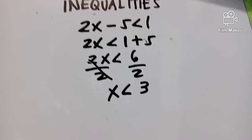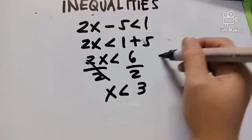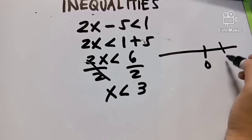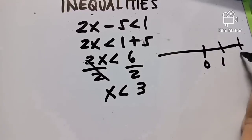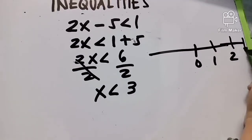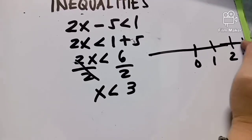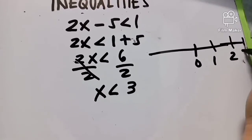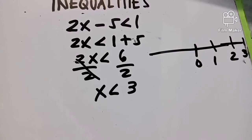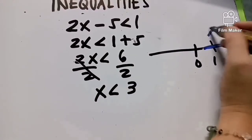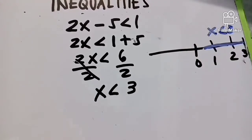So how do we graph this? We draw a number line with 0, 1, 2, and 3. Since X is less than 3 and not equal to 3, we place an open circle at 3. The graph goes to the left — that's our answer: X less than 3.